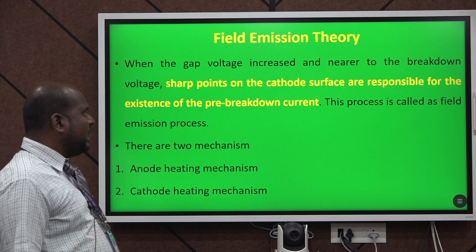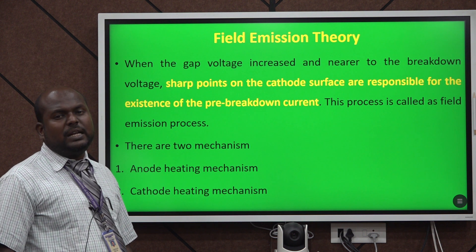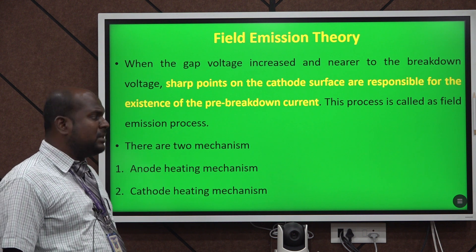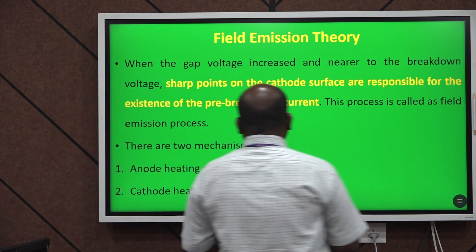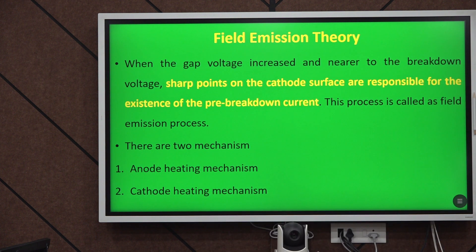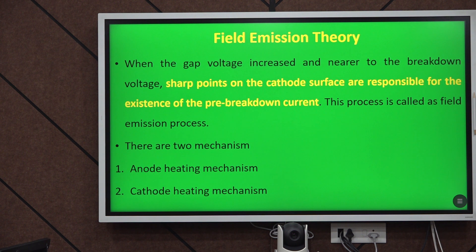The second mechanism is the field emission mechanism. In this mechanism, the sharp points on the cathode are mainly responsible for the breakdown and the existence of pre-breakdown. This mechanism is classified into two types: the anode heating mechanism and the cathode heating mechanism.